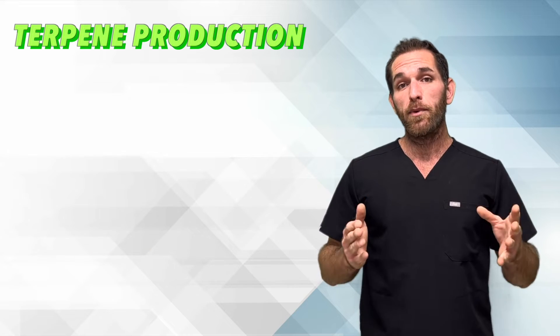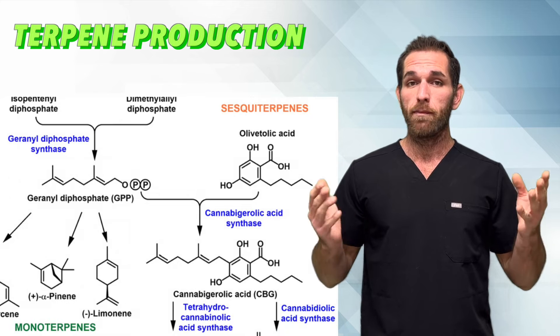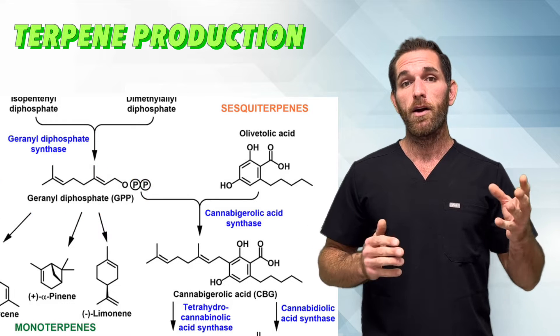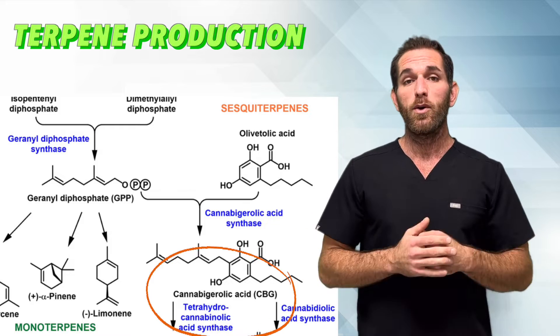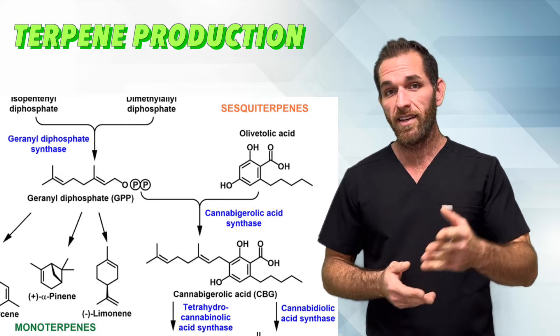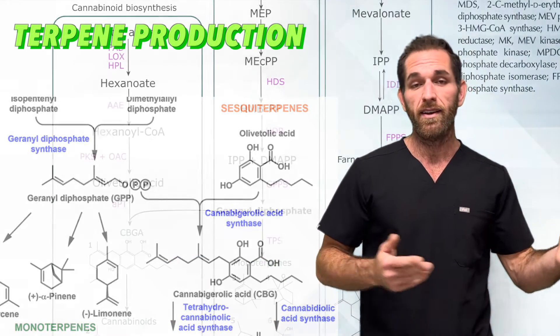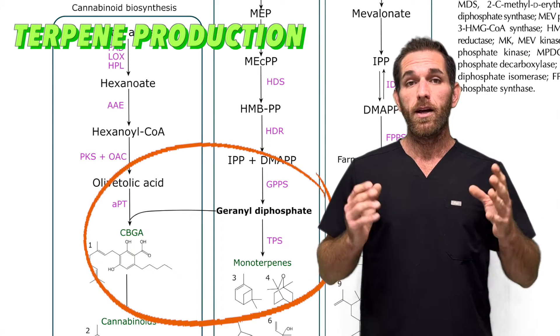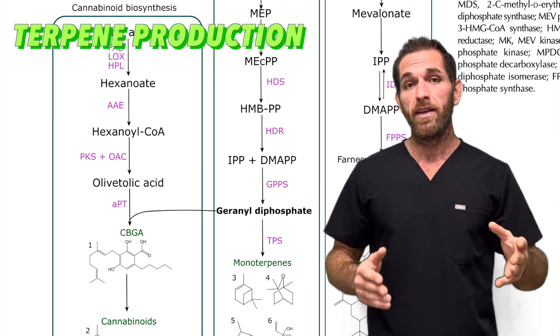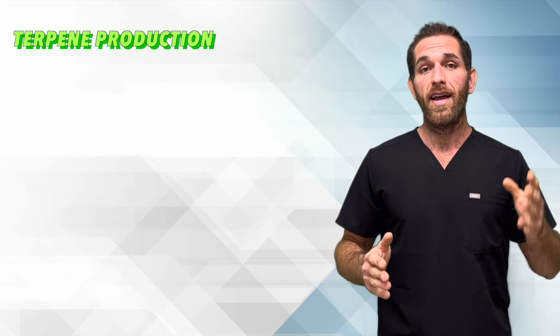Here's something even cooler: cannabinoids also share a common precursor with the monoterpenes. GPP, along with olivetolic acid, is the other precursor needed to produce CBGA, which is the parent compound to THC, CBD, etc. The GPP used in cannabinoid biosynthesis comes from the same pathway that uses GPP to produce monoterps. So if cannabinoids can affect us and they're essentially derived from terpenes, why couldn't terpenes affect us?